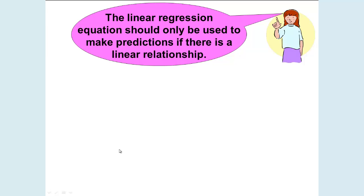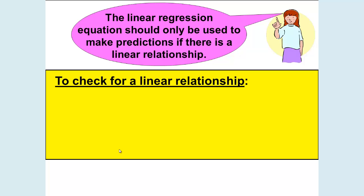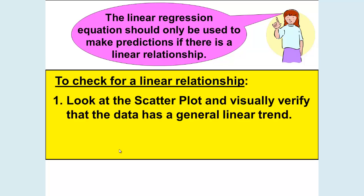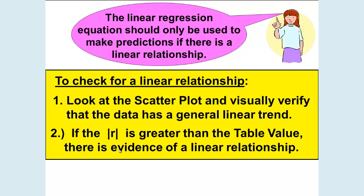The linear regression equation should only be used to make predictions if there is a linear relationship. And to check for a linear relationship, we look at the scatter plot and visually verify that the data has a general linear trend. And if the absolute value of the R is greater than the table value, there is evidence of a linear relationship. Using the table value this way tests the claim that the slope is not 0.